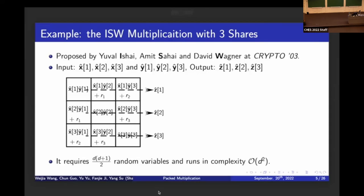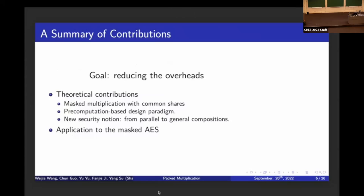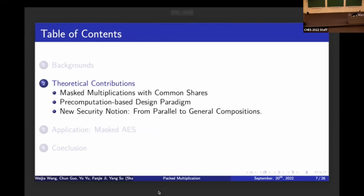Masking comes with overhead: the computational cost of the ISW scheme increases by a factor of d² and requires around d² random variables. We are interested in reducing this overhead — considering both computational complexity and randomness complexity. Our contributions divide into theoretical ones — a new multiplication gadget, a new paradigm, and a new proof technique — and a practical application to AES.